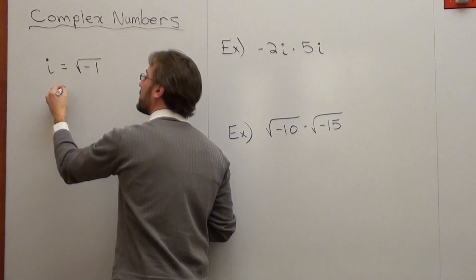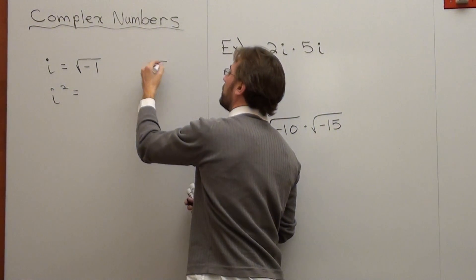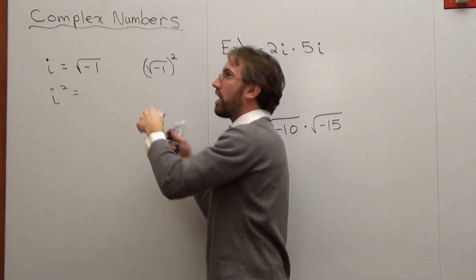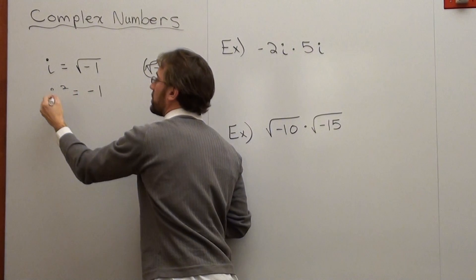So I have i squared next, which is basically like squaring the square root of negative one. That cancels. i squared, by definition, is negative one.